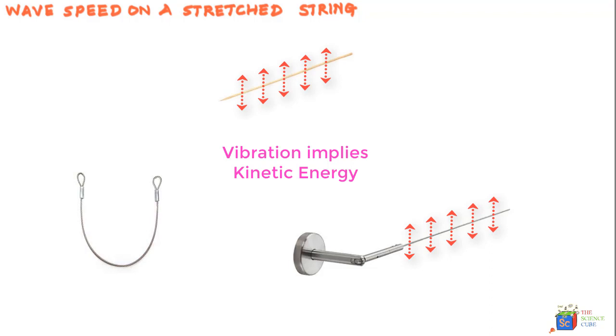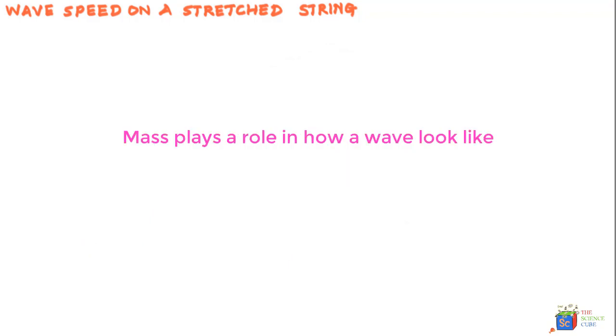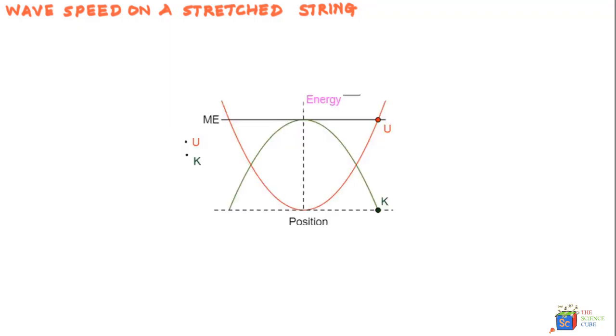There can be no kinetic energy without mass, so mass has to play a role in determining how the wave would look. We also know from earlier lessons that this kinetic energy is not constant—it fluctuates between some minima and maxima.